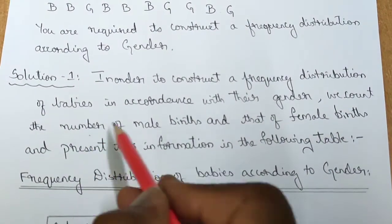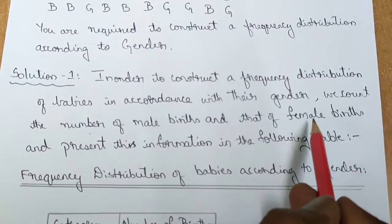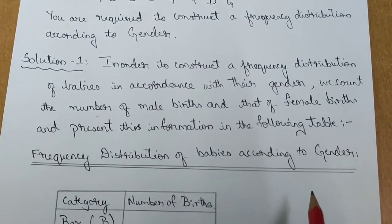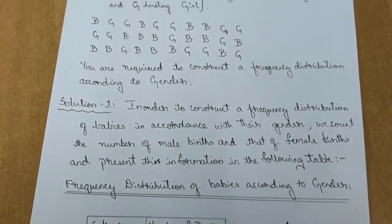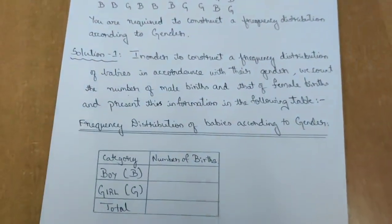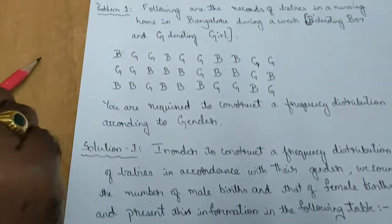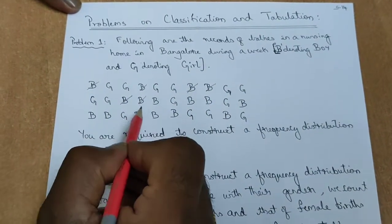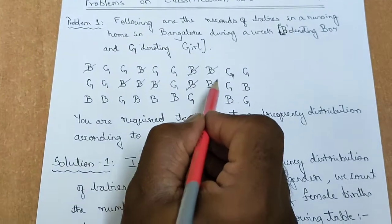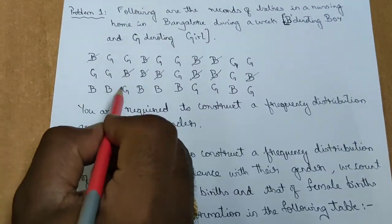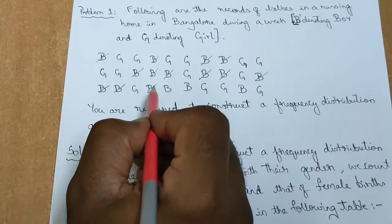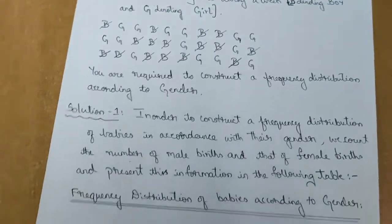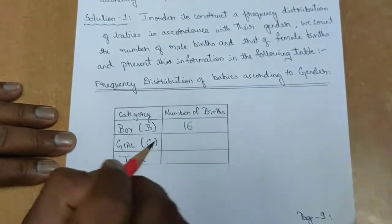Therefore, we count the number of male births and that of female births present and present this information in a table. So let us now count the total number of boys and total number of girls. When we look into the question, total number of boys are 1, 2, 3, 4, 5, 6, 7, 8, 9, 10, 11, 12, 13, 14, 15 and 16. So total number of boys is 16.